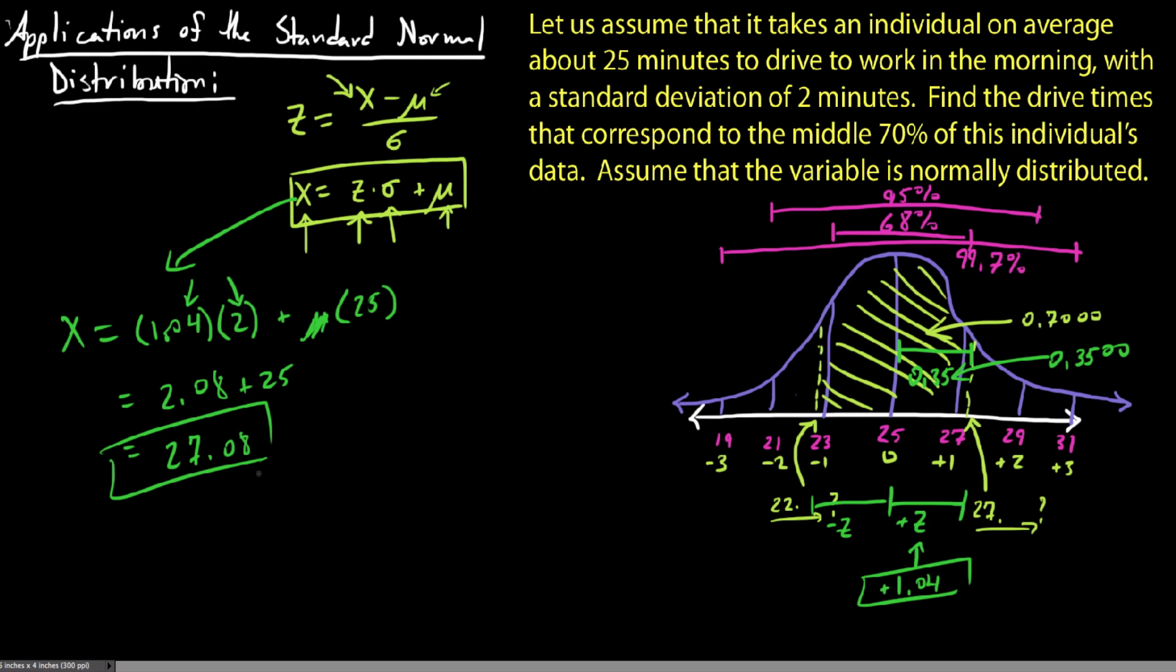Now that was on our high end. What if we used our negative z-score? If you use your negative z-score, you get x equals negative 1.04. We have negative 1.04 of these 2 things plus the average of 25. In this case we just simply get negative 2.08 plus our 25, and this would end up as 22.92.